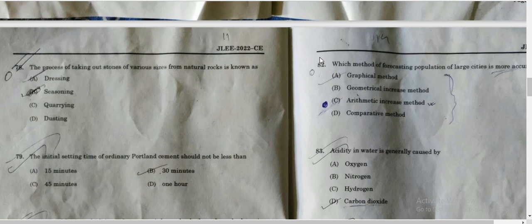Question number 78: the process of taking out stones of various sizes from necessary rocks is known as what? When we have necessary rocks and we take out stones, what process do we follow? Options are dressing, seasoning, quarrying, and dusting. Seasoning term is related to woodwork, so we can omit this option. Dusting is also not related to rocks. So our options are dressing and quarrying. The correct option is quarrying. Quarrying is the process of removing rocks, sand, gravel, or other minerals from the ground in order to use them to produce materials for construction. When we have big boulders, we take them out - that is quarrying.